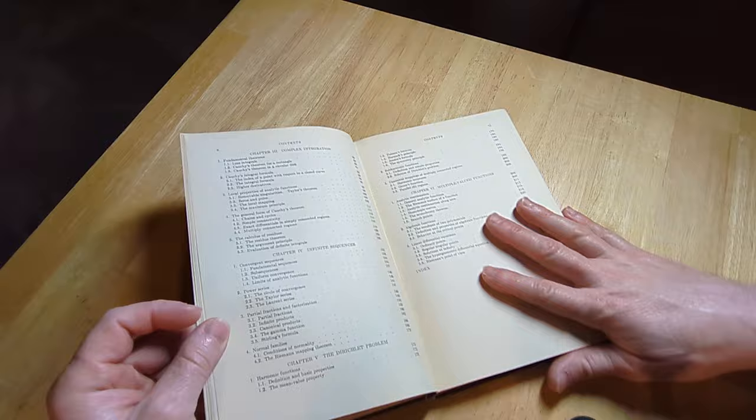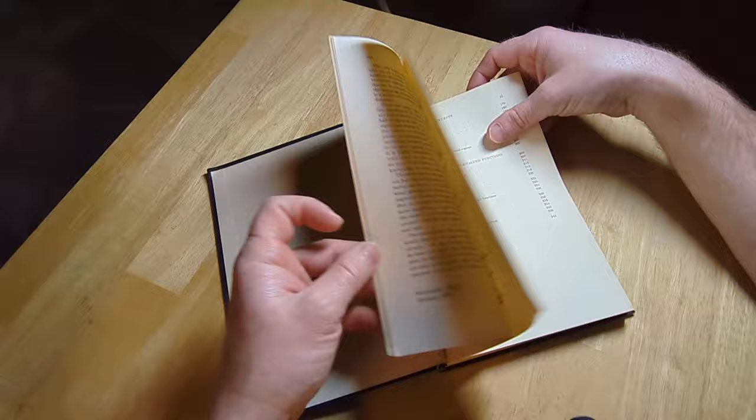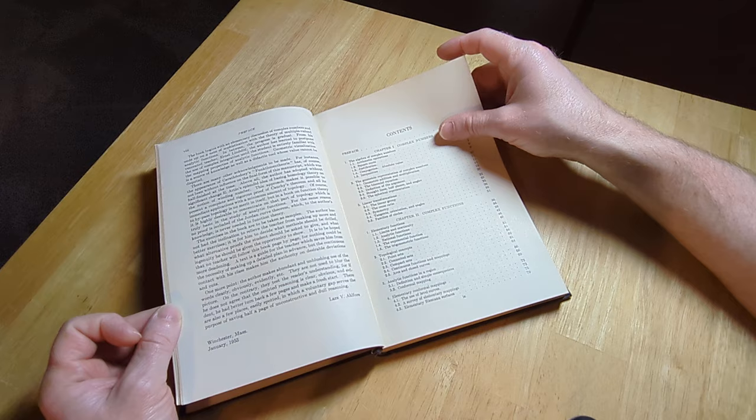It's got a lot of topics, right? You normally wouldn't cover everything in an undergraduate course. You would definitely do a lot of the stuff here at the beginning in Chapter 2 on complex functions. Definitely the stuff in Chapter 1.